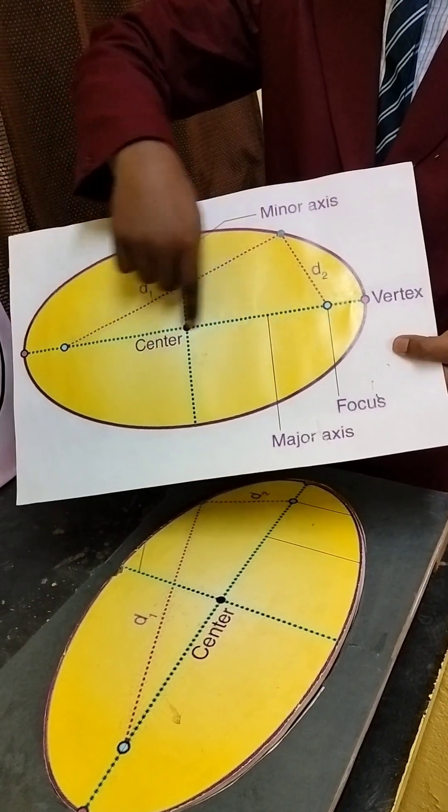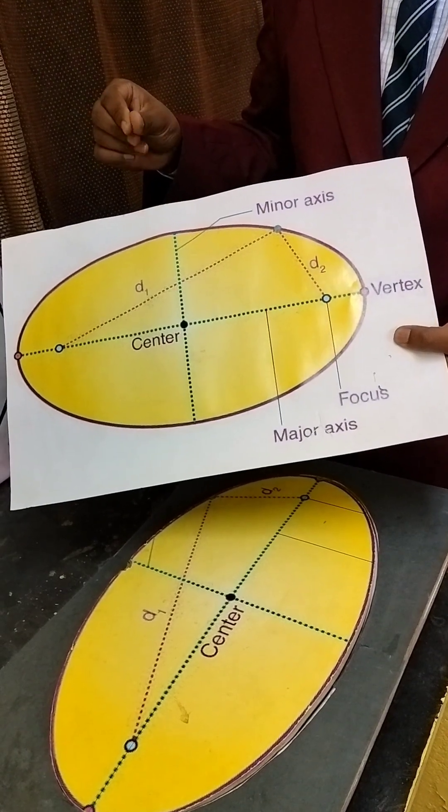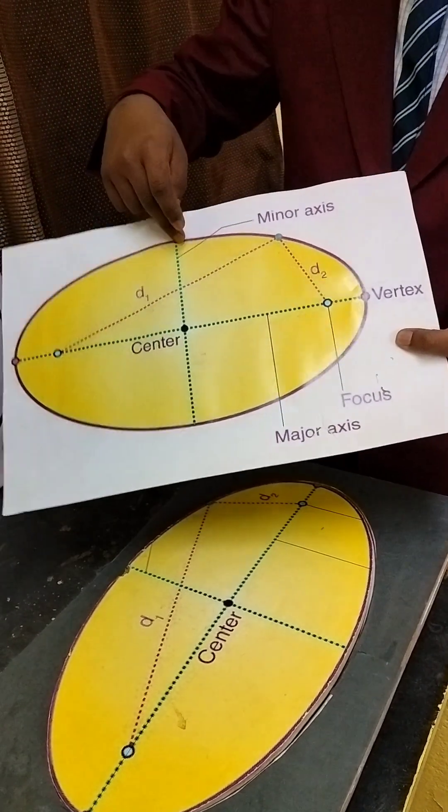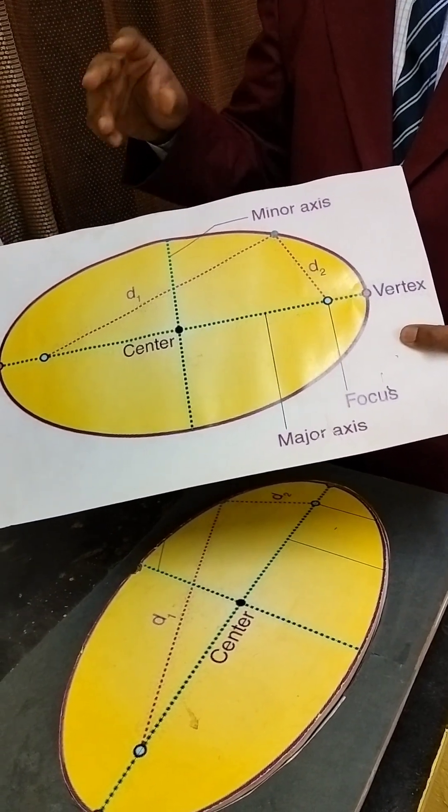The longer length of the axis is called the major axis of the ellipse, and the shorter length of the axis is called the minor axis of the ellipse. An ellipse has two foci.